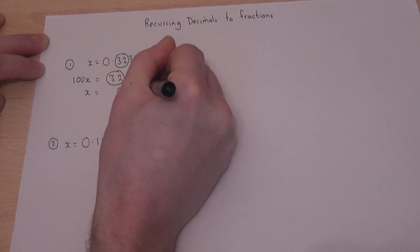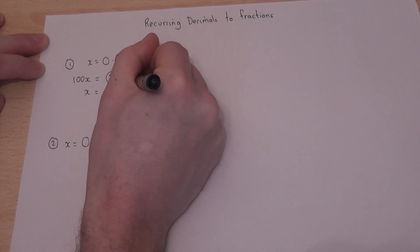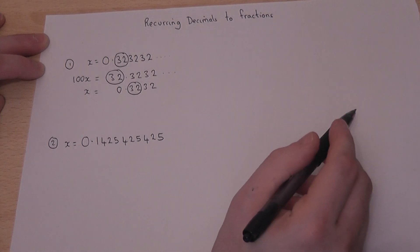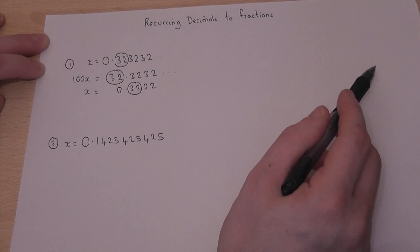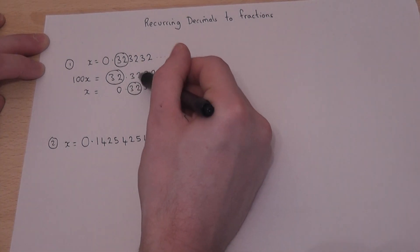So 0.3232. That was the initial recurring part. And look, all the numbers after the decimal point match and line up.